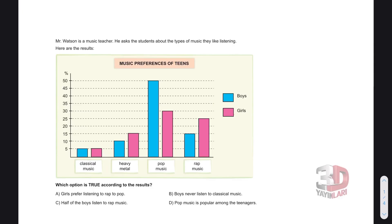Hello everybody. Let's read the question. Which option is true according to the results? Let's read what the graph is about. Mr. Watson is a music teacher and he asks the students about the types of music they like listening. Here are the results. Let's look at the options.